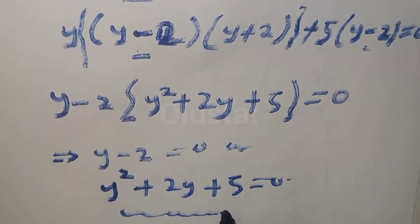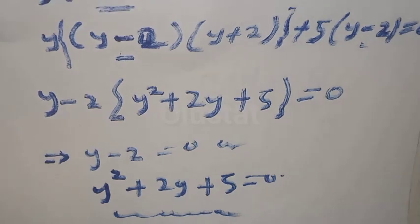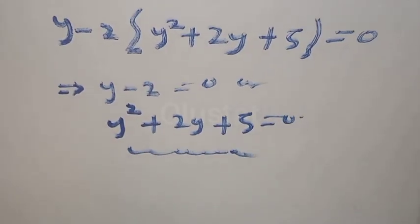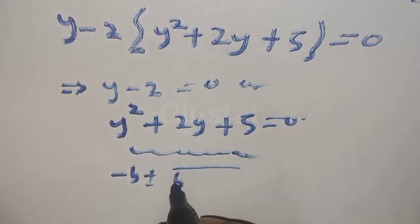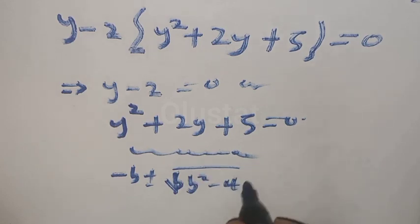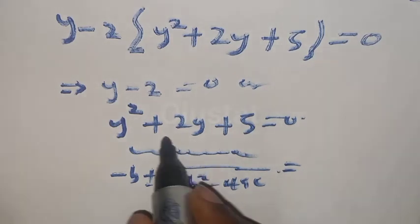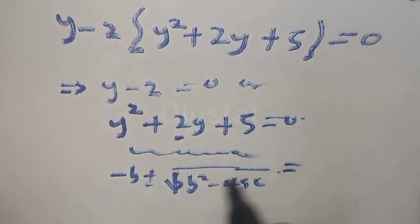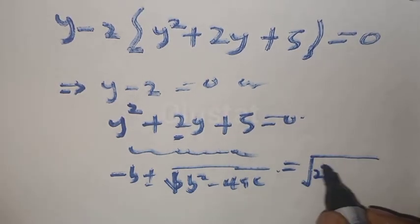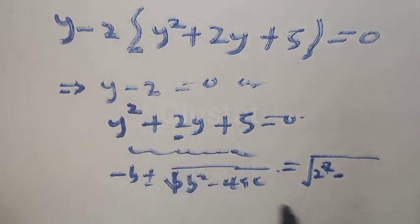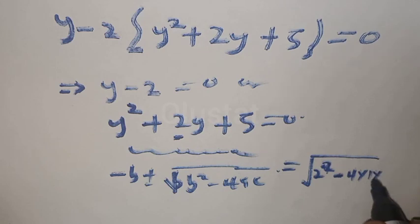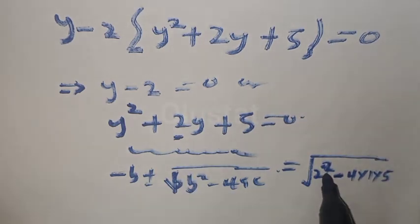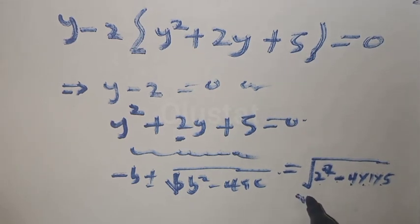We have y minus 2 equals 0, or y squared plus 2y plus 5 equals 0. But this quadratic gives a negative discriminant, so it has no real solution. From the general formula, b is 2, so we check: b squared minus 4ac equals 4 minus 4 times 1 times 5, which is 4 minus 20, giving minus 16, which is negative. So we don't need this — it yields no real solution.